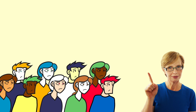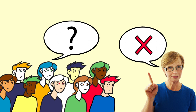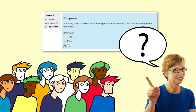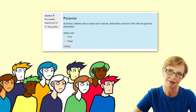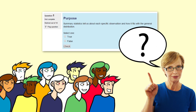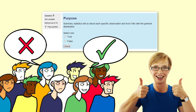We have found that true/false questions are helpful for challenging misconceptions and developing vocabulary. You can use the quiz as a way to structure class discussion. For example, the first question in this quiz is about the purpose of summary statistics and states: 'Summary statistics tell us about each specific observation and how it fits with the general distribution.' You can ask the students to vote on whether they think a statement is true or false. If the class is divided, this provides an opportunity for discussion.